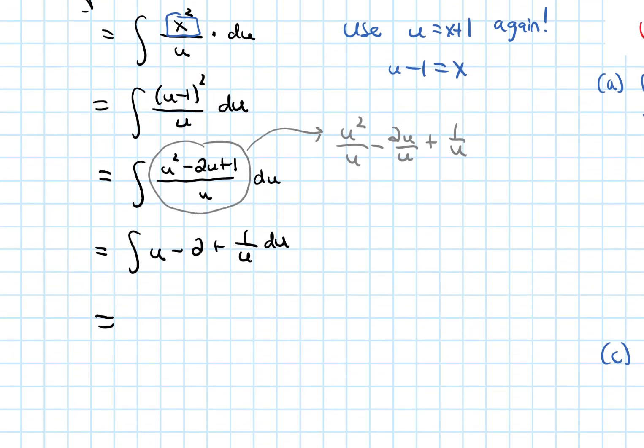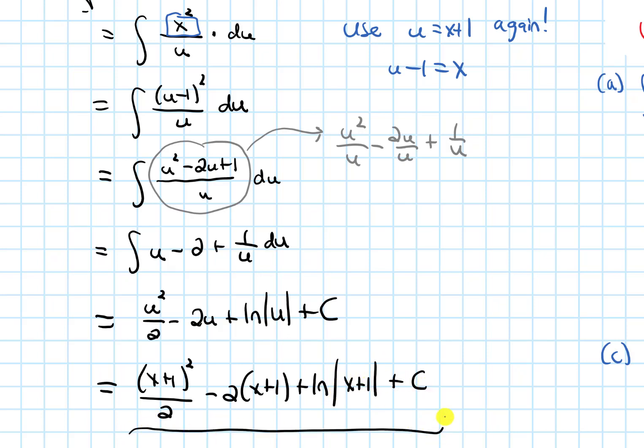So now if we finish off this antiderivative, we'll get u squared over 2 minus 2u plus ln absolute value of u plus c. And then we got to plug back in for what u was, which is x plus 1. So we get x plus 1 quantity squared over 2 minus 2 times the quantity x plus 1 plus ln absolute value of x plus 1 plus c. And that is our antiderivative.